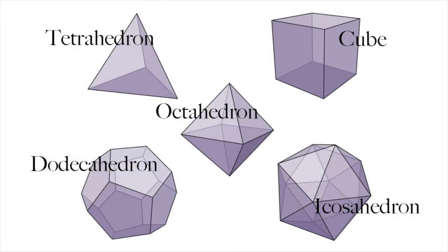There are exactly five Platonic solids: the tetrahedron, the cube, the octahedron, the dodecahedron, and the icosahedron. These have four, six, eight, twelve, and twenty sides respectively.